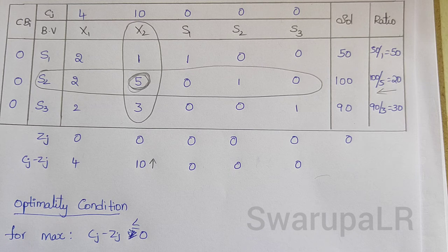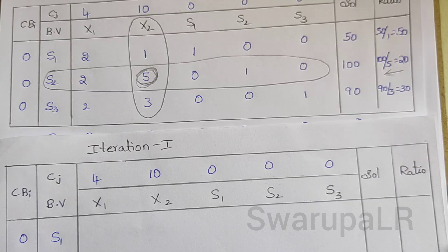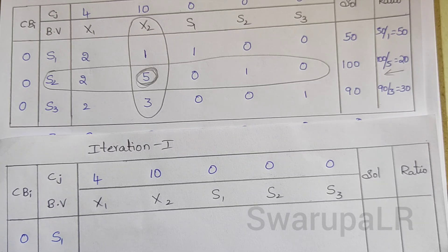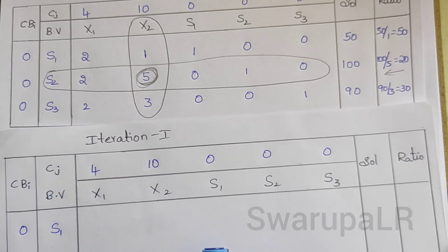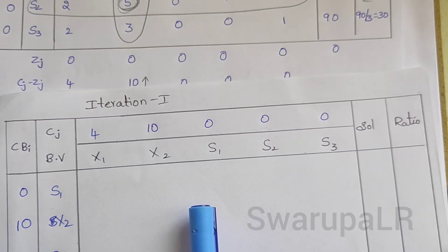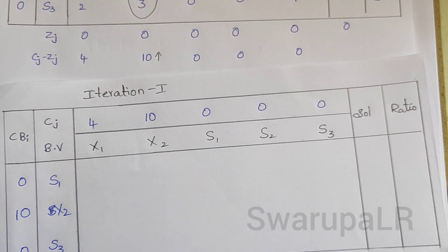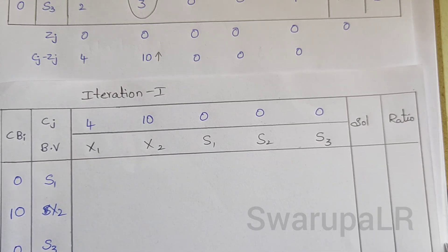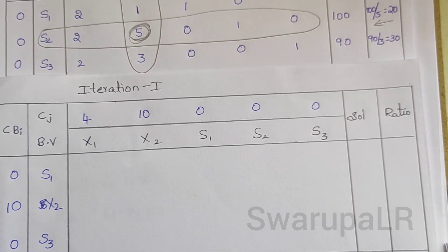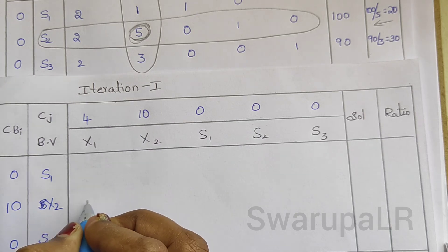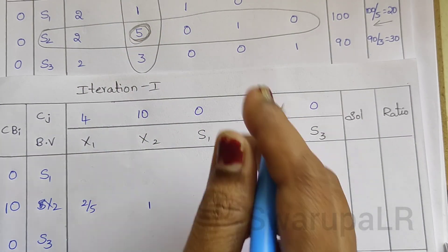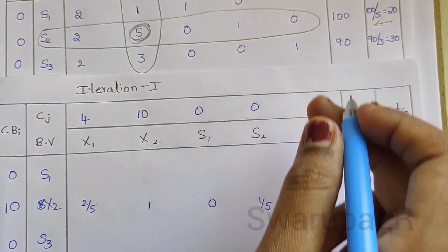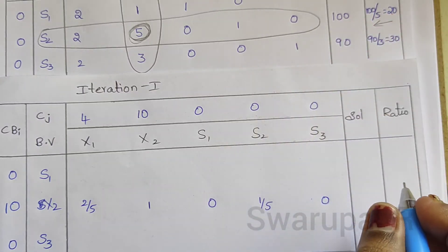Now we have to find the next iteration table — this is iteration table 1. We have written x2 here because s2 is the leaving variable and x2 is the entering variable. To find the x2 row values, we divide the old values by the key value: 2 divided by 5 is 2/5; 5 divided by 5 is 1; 0 divided by 5 is 0; 1 divided by 5 is 1/5; 0 divided by 5 is 0; and 100 divided by 5 is 20.